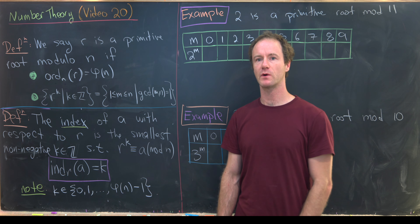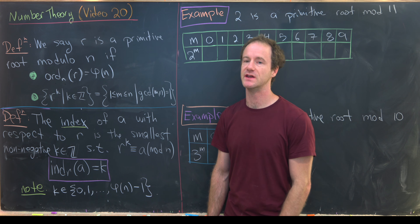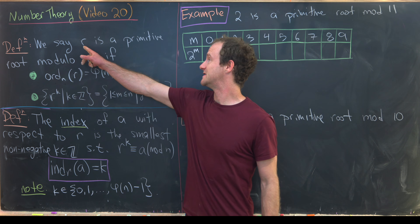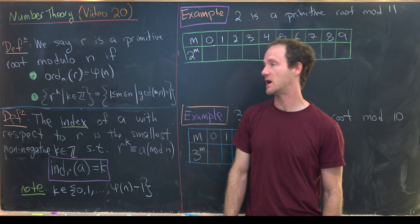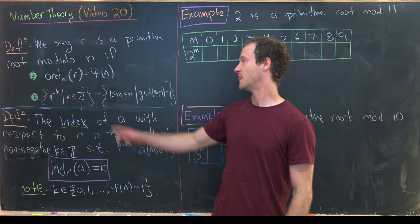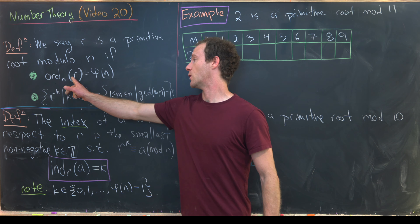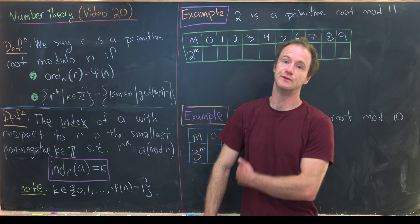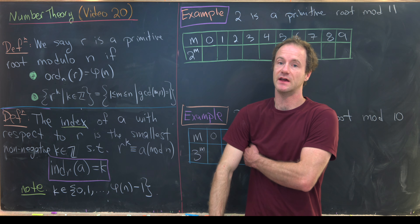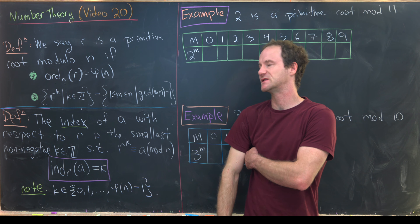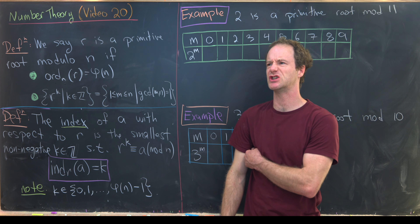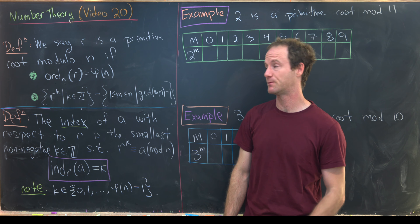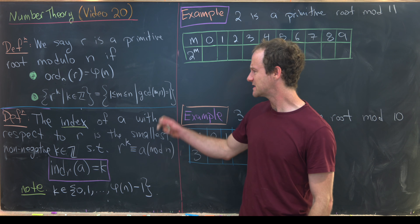Let's recall what a primitive root is. We say that r is a primitive root mod n if the order of r mod n is equal to φ(n). So this number achieves the greatest possible order mod n.